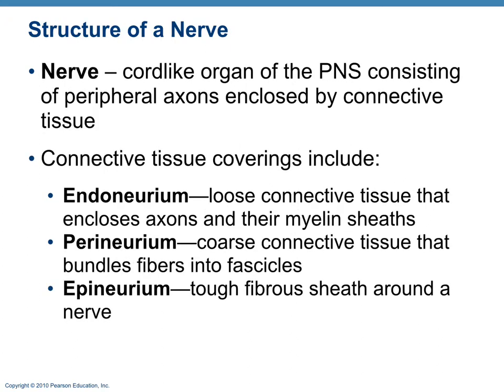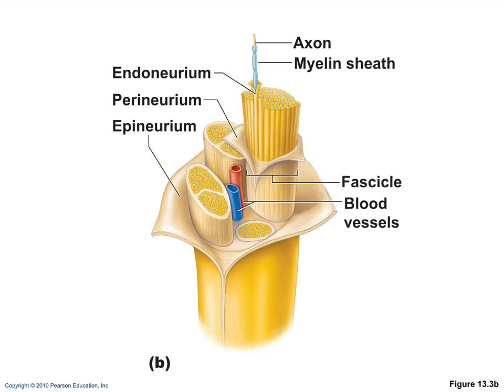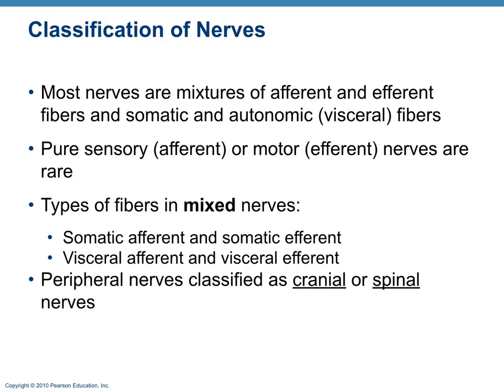Looking at nerve structure, we have coverings of the nerve. The endoneurium covers the axon and myelin sheath. The perineurium surrounds the fascicles, which is the bundle of fibers. The epineurium surrounds the entire nerve. Most nerves are mixed nerves containing both afferent (sensory) and efferent (motor) fibers — somatic afferent, somatic efferent, visceral afferent, and visceral efferent. Peripheral nerves can be either cranial nerves or spinal nerves.